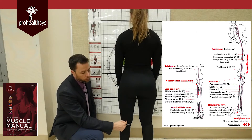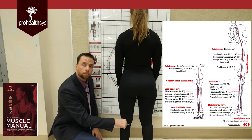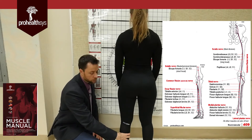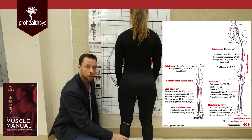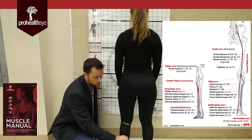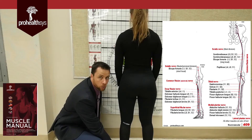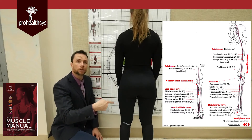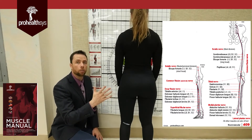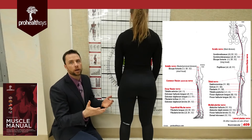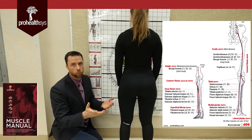The tibial nerve continues down in the posterior compartment of the leg, supplying all the muscles of the posterior compartment — both superficial and deep. It runs behind the medial malleolus, where it splits into medial and lateral plantar branches, supplying the corresponding regions of the foot.